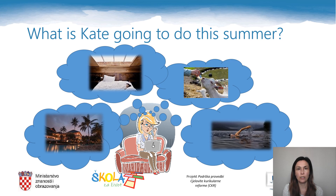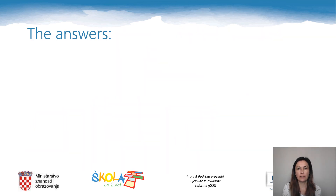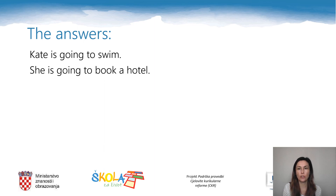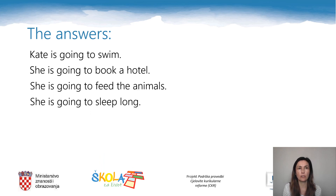Now have a look at the picture and answer the following question: What is Kate going to do this summer? You can see that Kate is thinking about four things. It means that she hasn't arranged anything — these are her plans. When we talk about plans, we use going to future. Your task is to say four sentences about Kate's plans. The answers are: Kate is going to swim. She is going to book a hotel. She is going to feed the animals. She is going to sleep long.